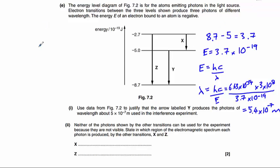So we need to do the same equation again. This time lambda equals 6.63 times 10 to the minus 34 times 3 times 10 to the 8 divided by the differences between these two for X. So 5 take away 2.7, so that's 2.3 times 10 to the minus 19,